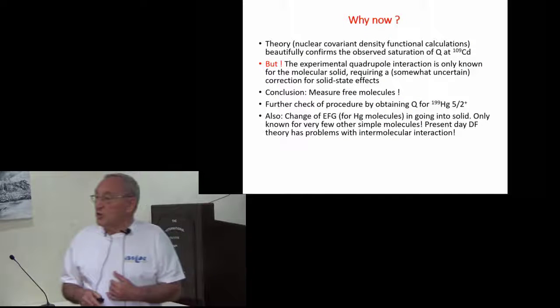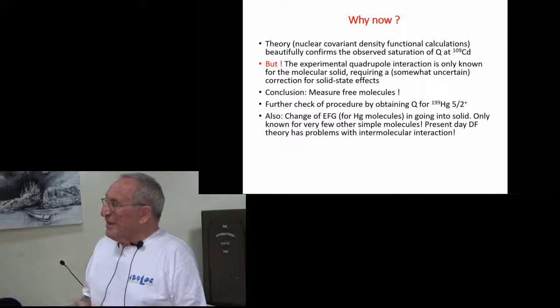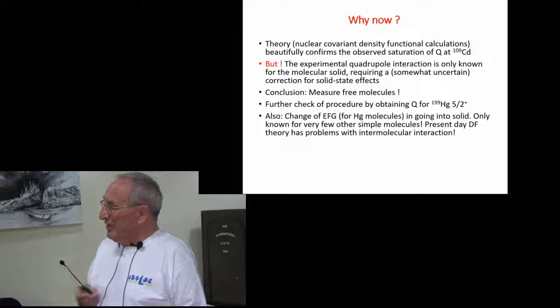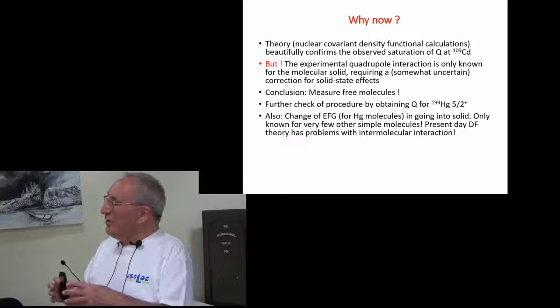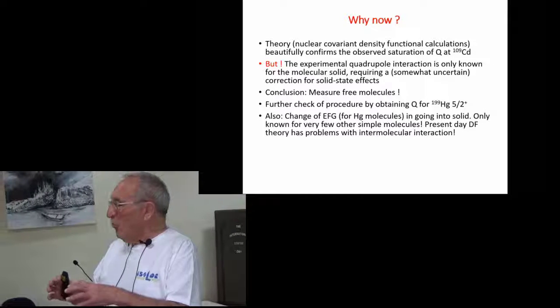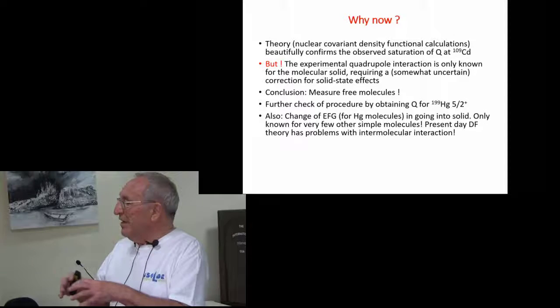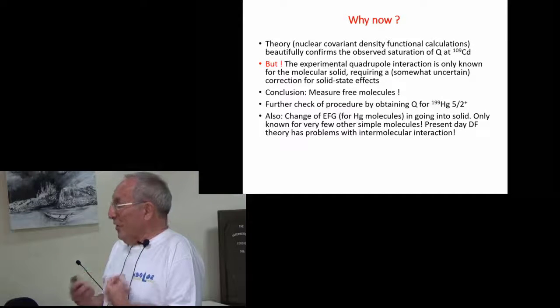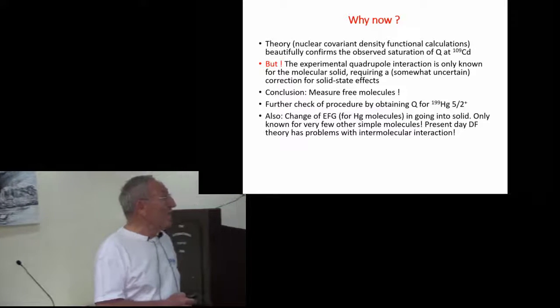Why do another experiment? The reason is that the experimental number for the cadmium dimethyl had to come actually from a solid state experiment. The molecule many, many years ago, we had measured in the solid. And so we had to correct a little bit with as much as we know about it, the interaction happening in these molecular crystals. So to get rid of that, just measure a pure molecule. That was the whole idea.